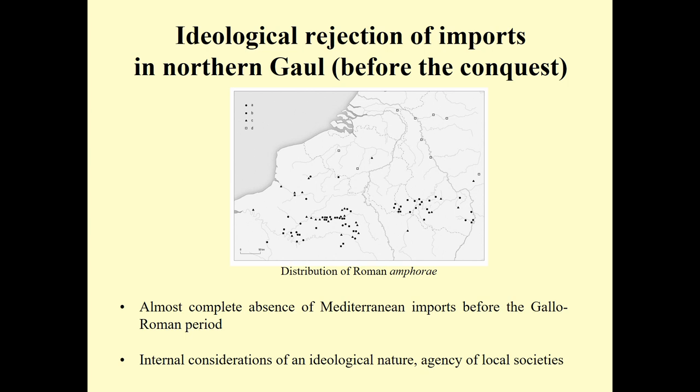For a long time, many scholars interpreted this as these communities not having access to these products because of trade routes or the nature of exchanges. I would rather see this as a conscious rejection based on the ideology of these communities. This map is a reflection of the agency of local societies rather than an inability to access these products.